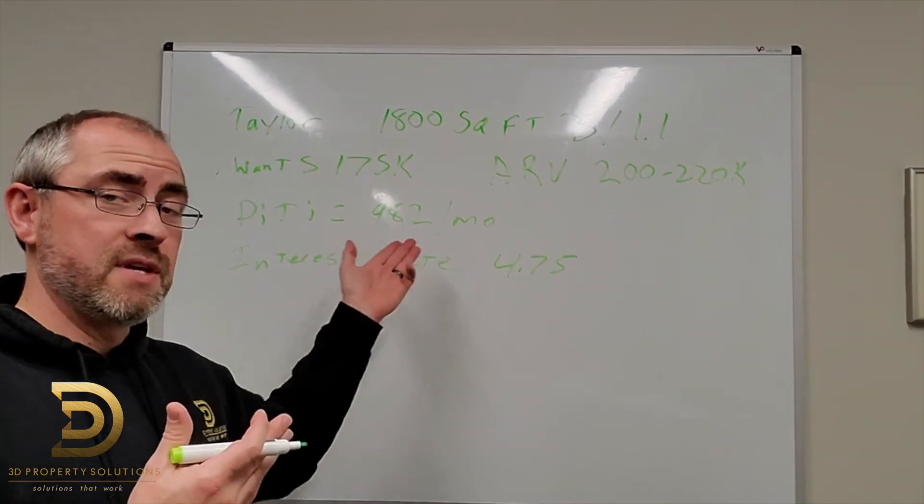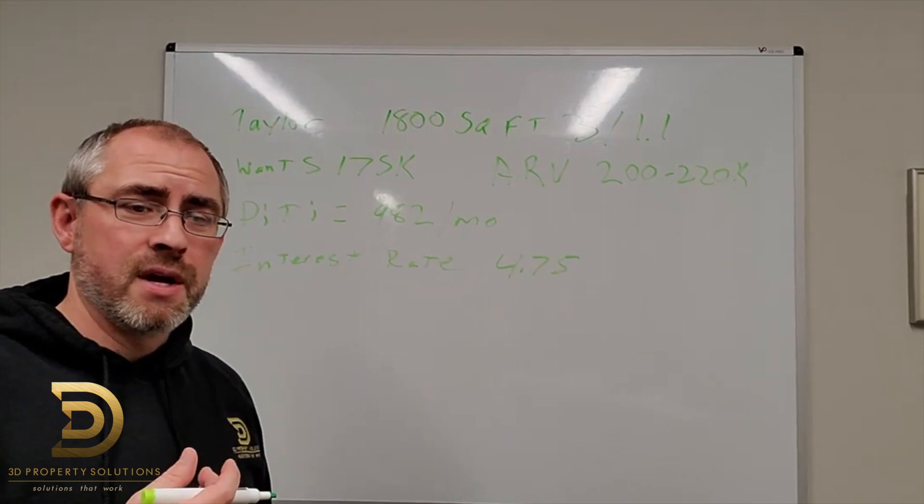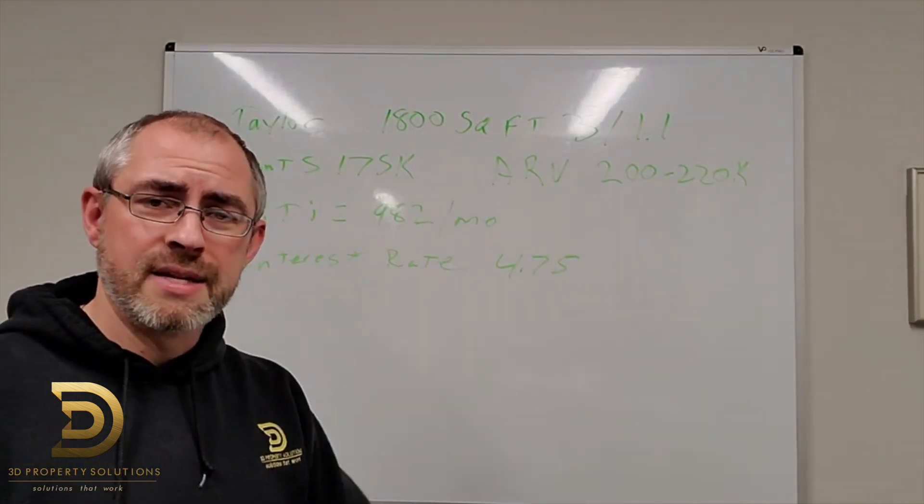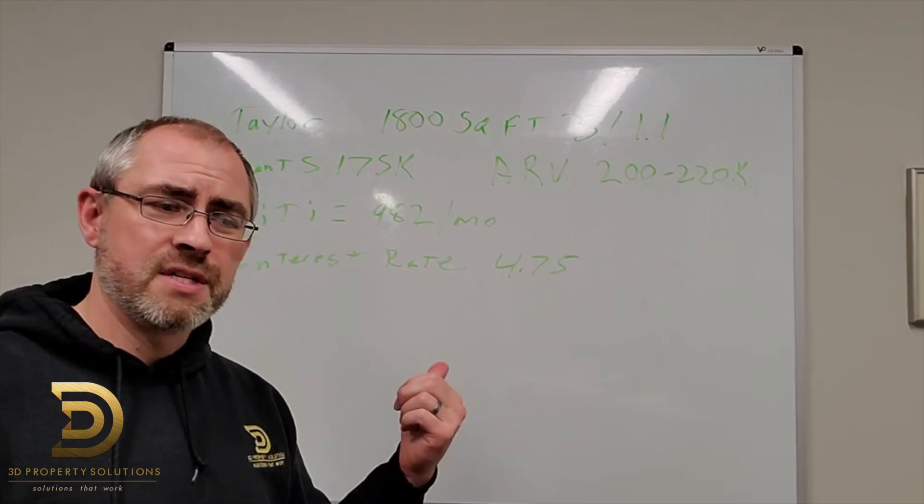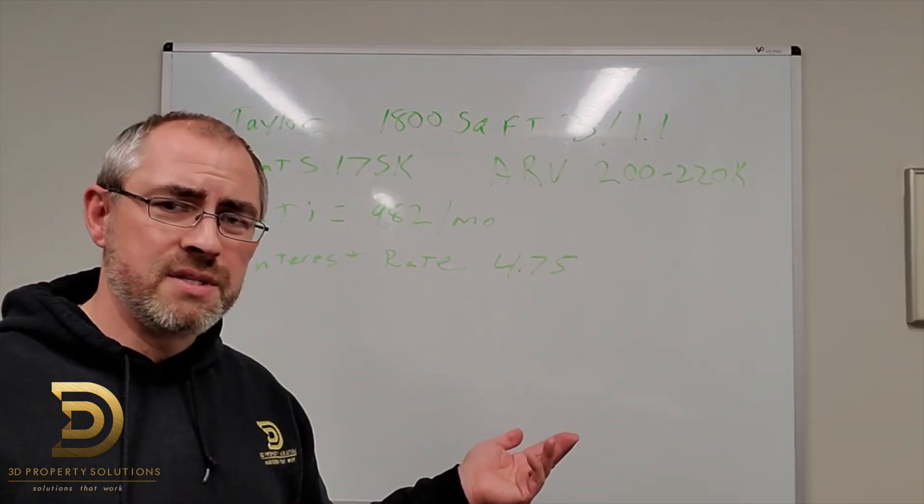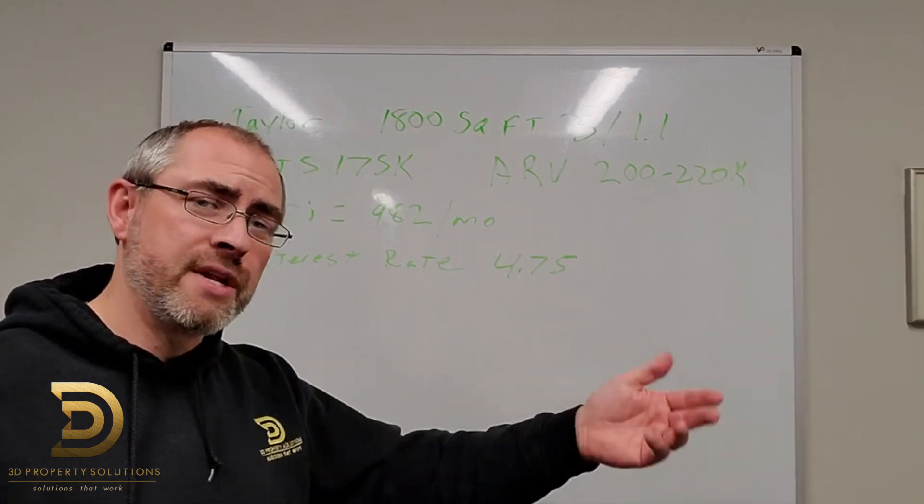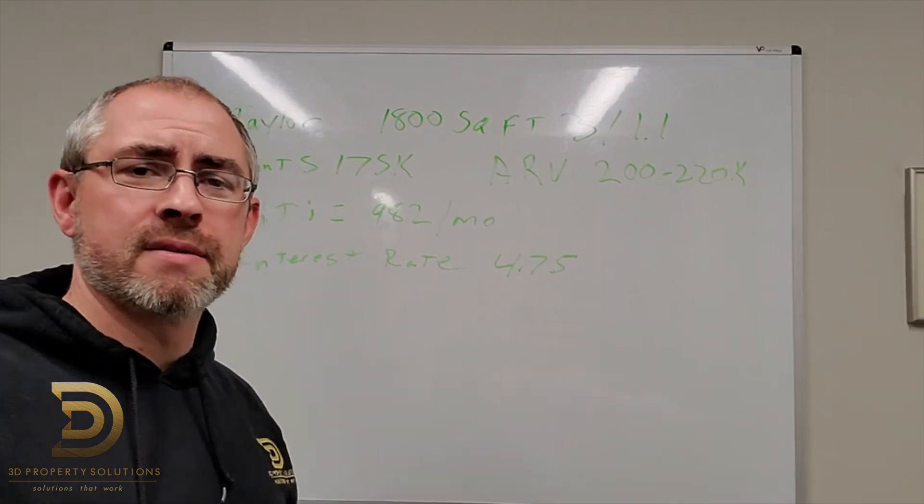I mean, assuming that you're going to go after the subject-to route and give the seller a down payment to get out of Dodge, and then you take over the existing payments, do you see anything else that we could do with this deal? Who would you rent to? What are your thoughts? I'd love to hear them.